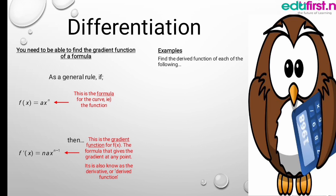Now let's take a look at an example. Find the derived function of each of the following. We have f(x) equals x to the power 3. The derived function will give 3x to the power 2. Why? Because this power will be multiplied by x, which gives us 3x. Then the power is minus 1, that is 3 minus 1, giving us 2. That is why we have 3x to the power 2.